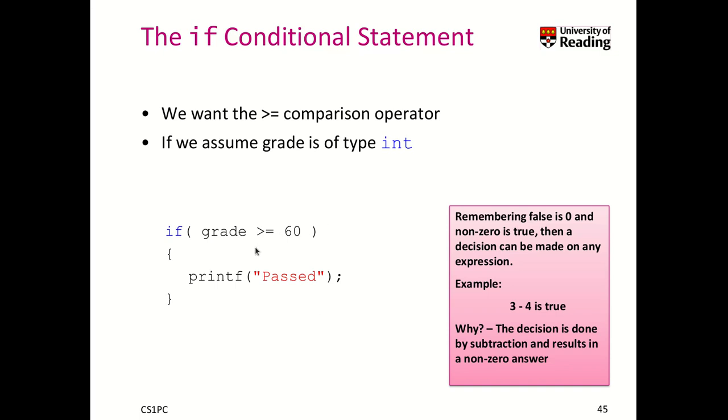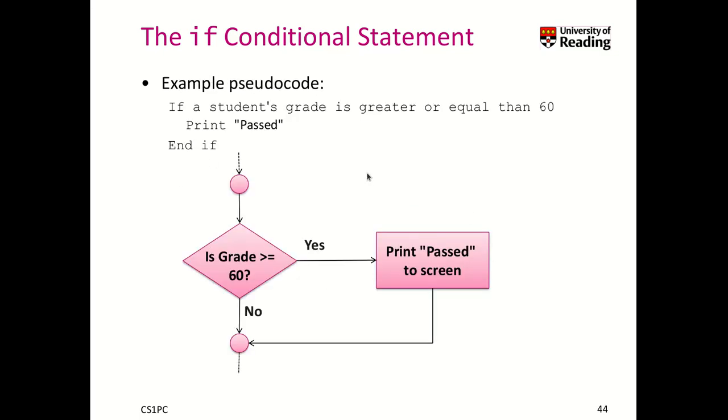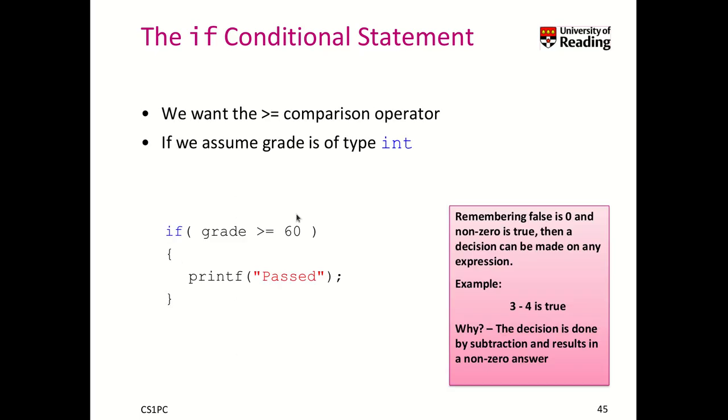Here we have another example. We turned this previous code from pseudocode into our C programming language. We assume grade is of type int, and if grade is bigger or equal than 60, we want to print passed on the screen.